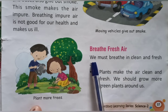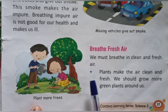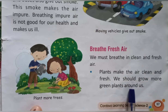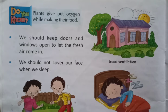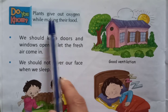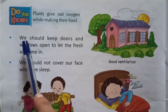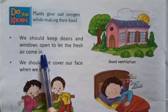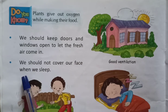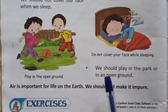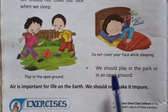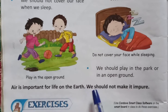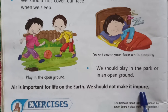We must breathe in clean and fresh air. Plants make the air clean and fresh, so we should grow more green plants around us. Plants give out oxygen while making their food. We should keep doors and windows open to let the fresh air come in. We should not cover our face when we sleep. We should play in the park or in an open ground. Air is important for life on the earth. We should not make it impure.